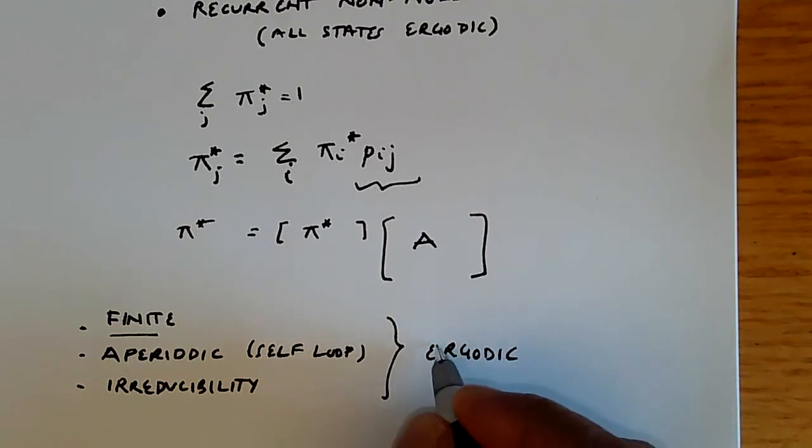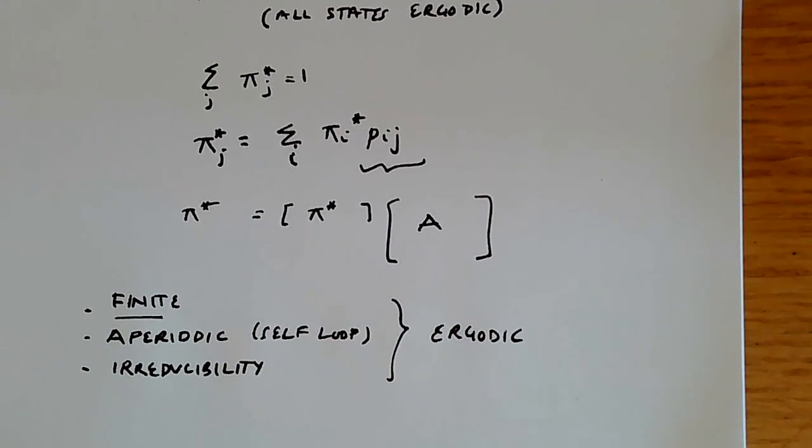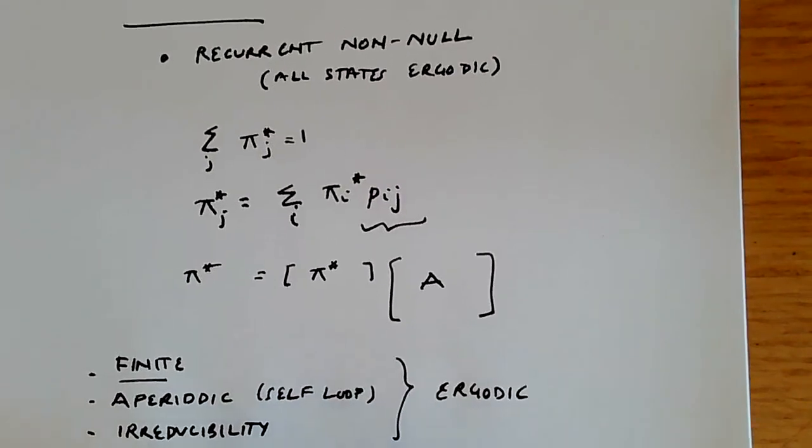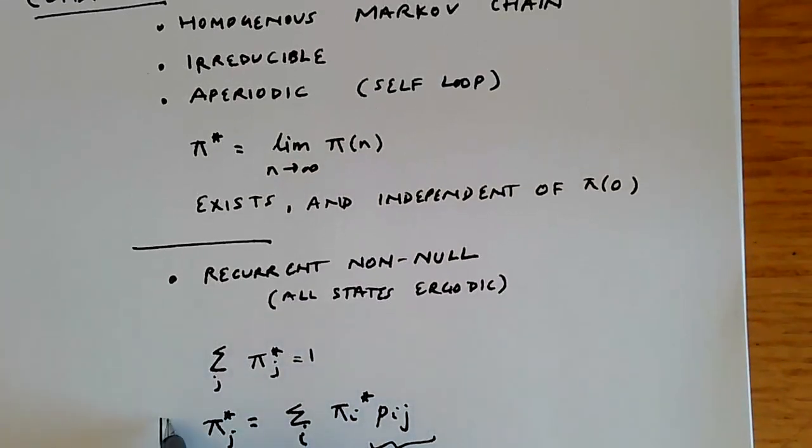And these can all be determined just by looking at the transition probability matrix or the state representation diagram, the state diagram. And when you have this, then you can immediately compute the stationary probability distribution using this relationship over here.